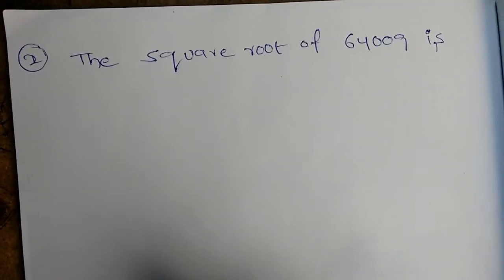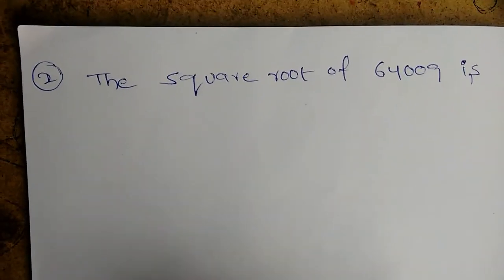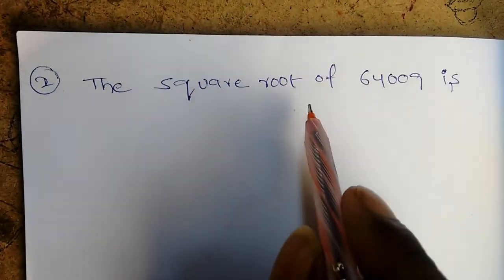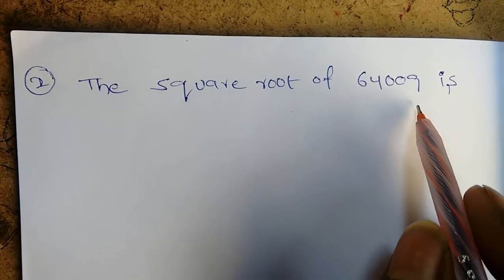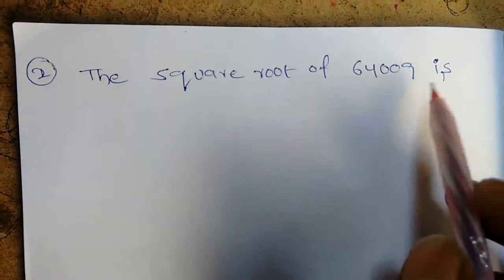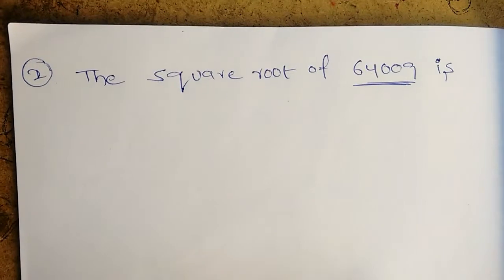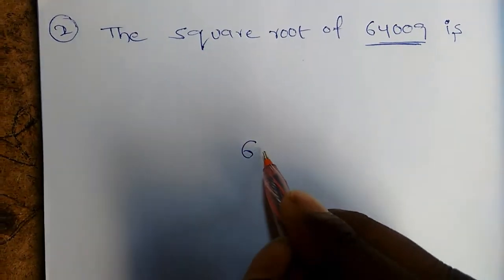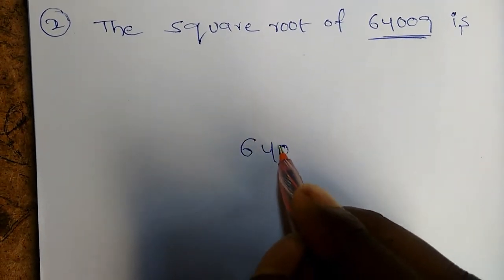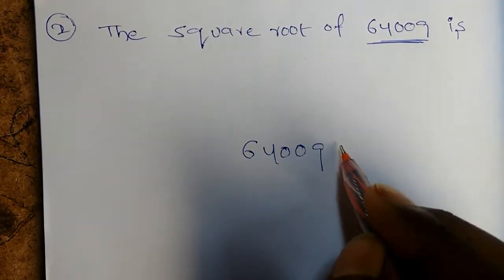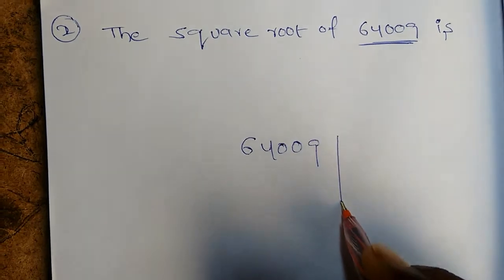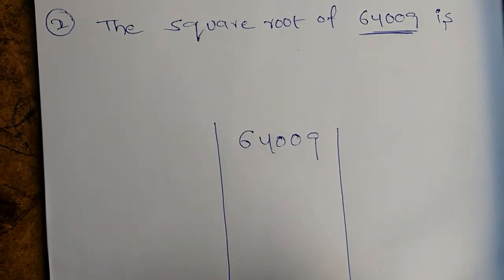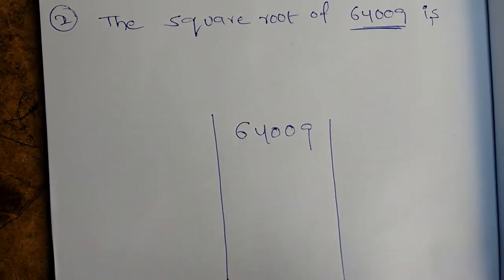I will write the squares and cubes in the book. I will write the second letter of the square root of 64009. I will write the square root of 64009. I will write it like this. This is the meaning of the report.